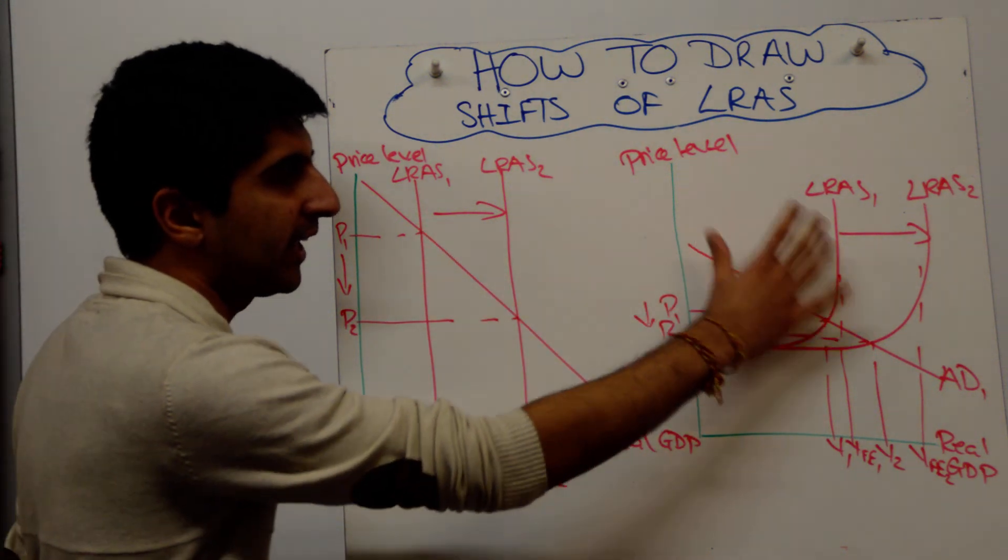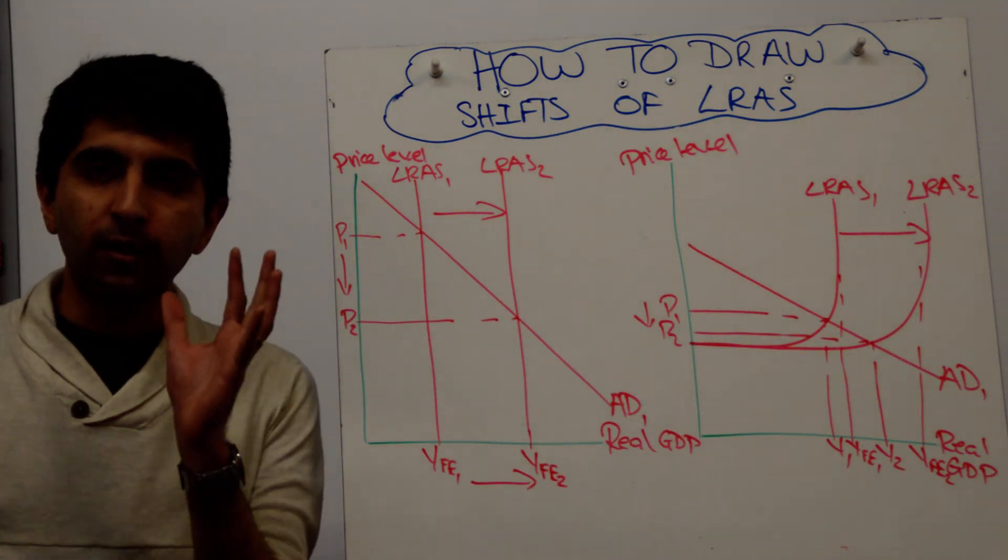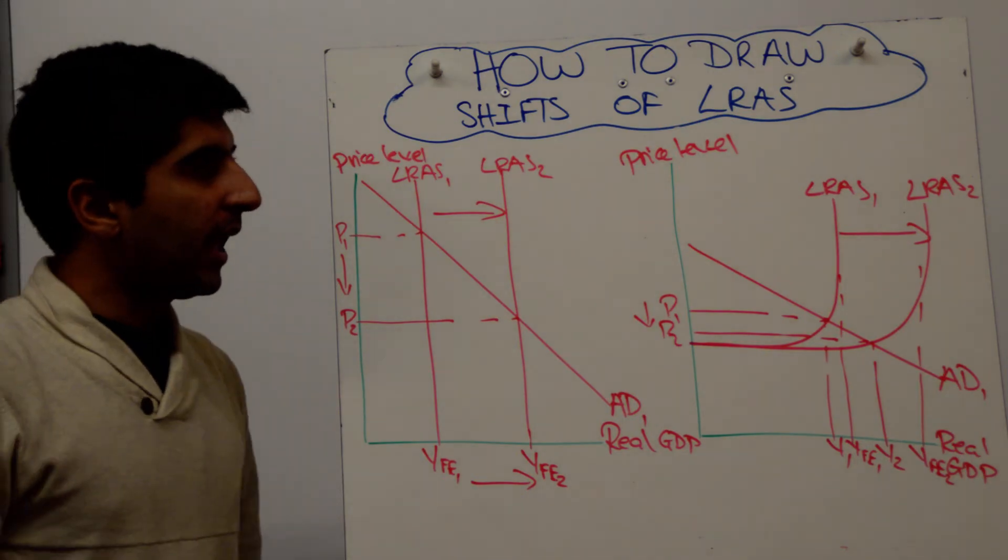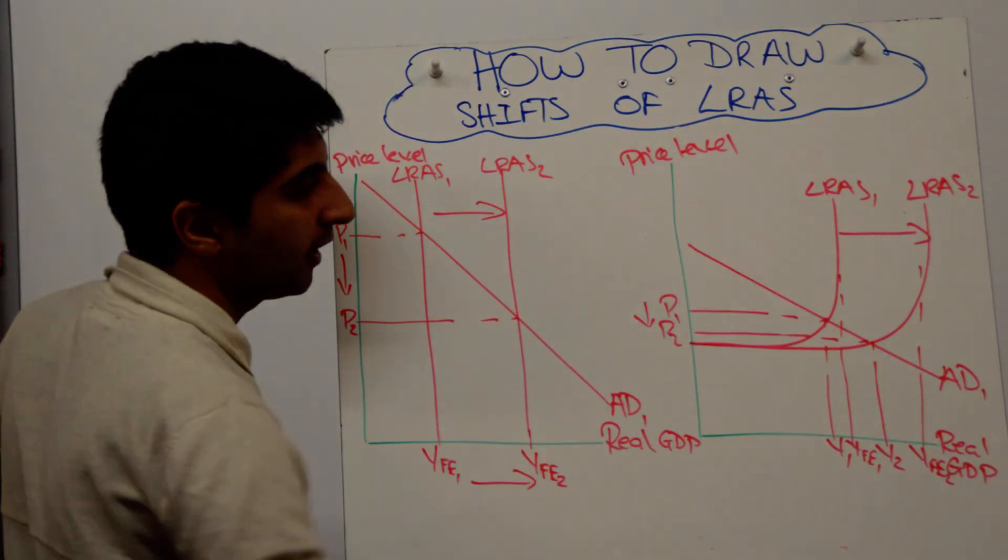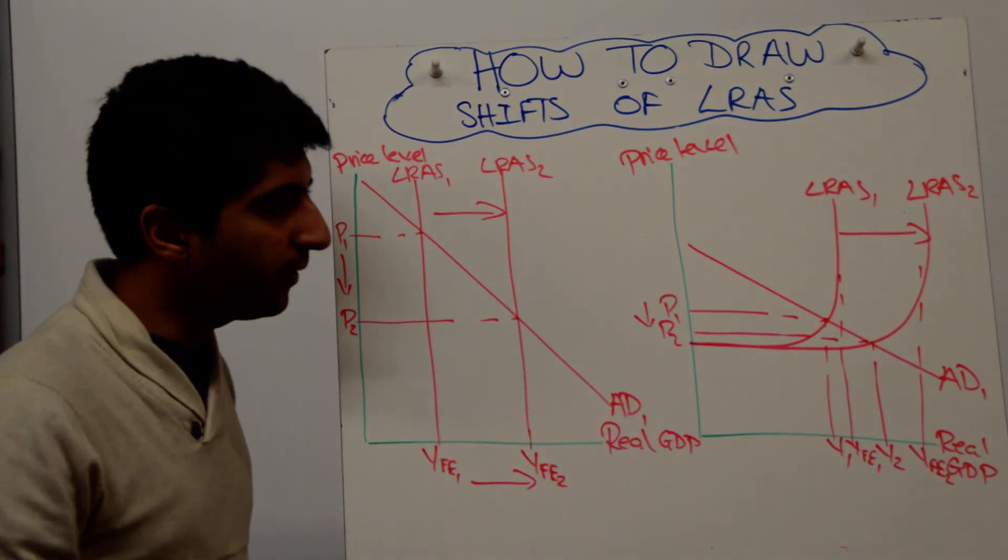And that will do the job for you there. So whether it's the classical model or the Keynesian model, you have ways to shift your LRAS curve to the right. Have we labelled our axes on both? Yes, we have. Have we labelled all of our curves? Yes, we have.